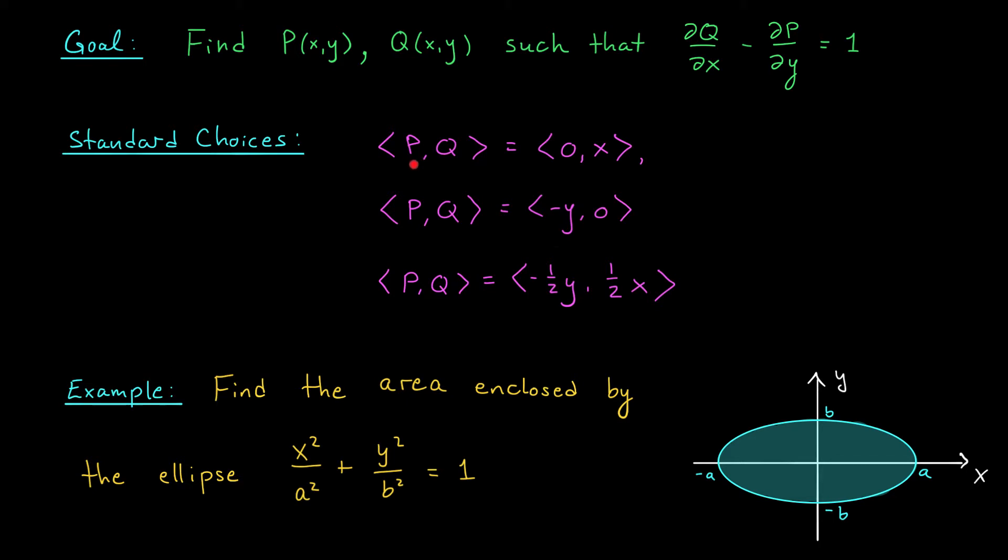For example, we could take P and Q to be 0 and x respectively. Then you would have ∂Q/∂x equals 1, ∂P/∂y equals 0, and there you go, the equation is satisfied. Likewise, you could also take PQ to be -y, 0, or PQ to be -y/2, x/2. There are lots of easy choices that can be made.